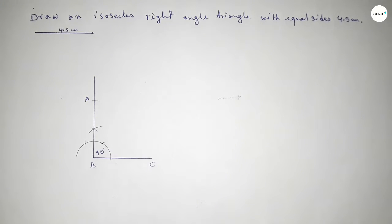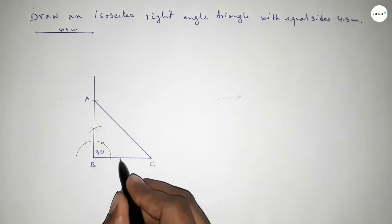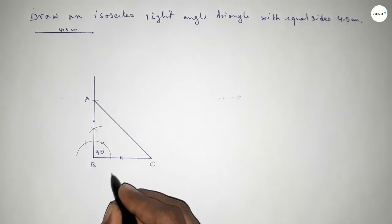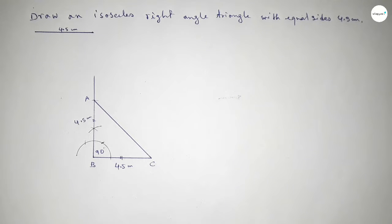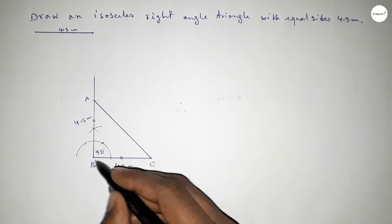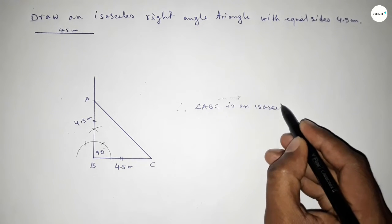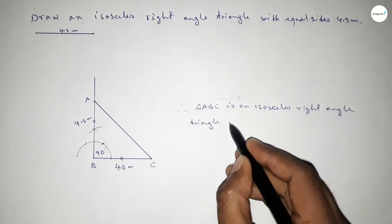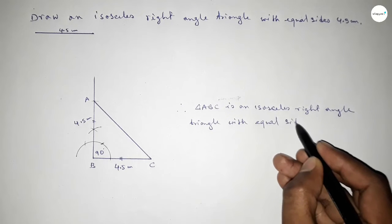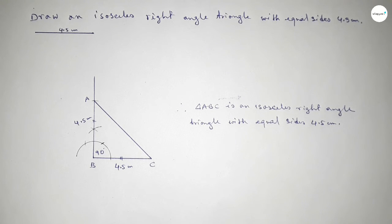Taking here point A. Now joining A and C to get the triangle. This side and this side are equal — both are 4.5 centimeters. Therefore triangle ABC is an isosceles right angle triangle with two equal sides of 4.5 centimeters. That's the process to construct it. Thanks for watching!